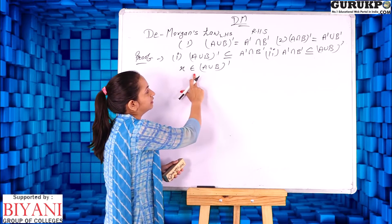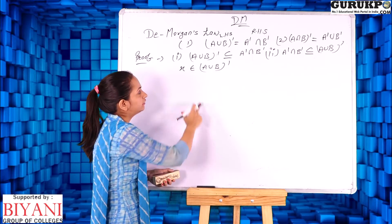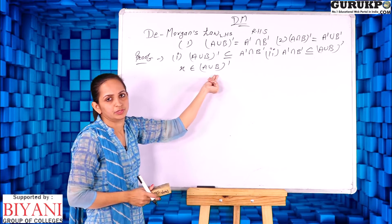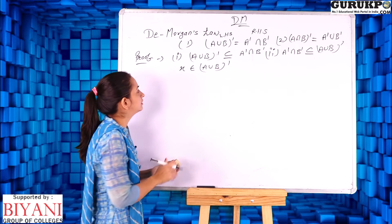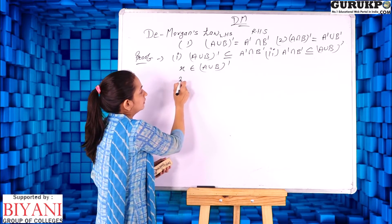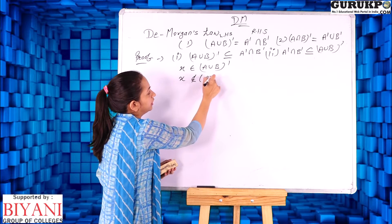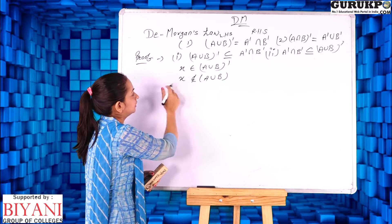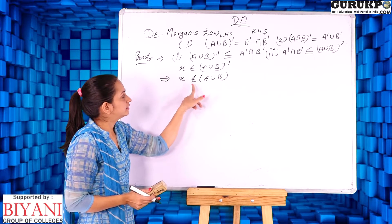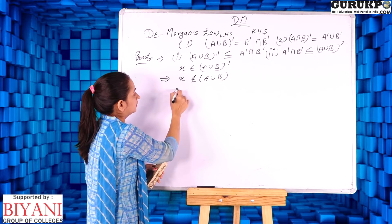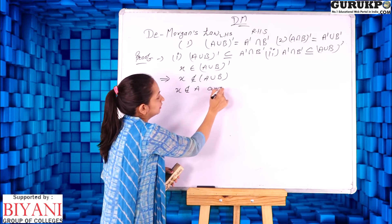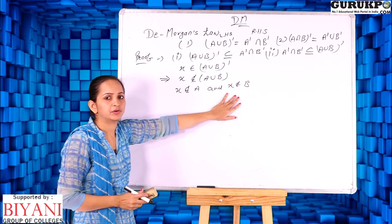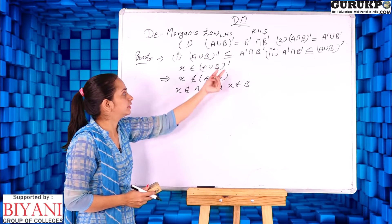So to prove the first part, I will assume an element x belongs to (A∪B)'. By the definition of complement, if any element belongs to the complement of a set, it means that element does not belong to that particular set. So if x belongs to (A∪B)', then x must not belong to A∪B. By the definition of the union operation, x not belonging to A∪B means x does not belong to A and x does not belong to B.